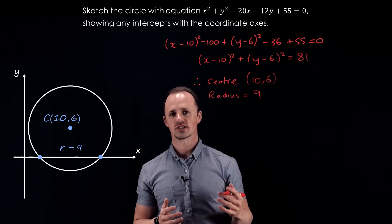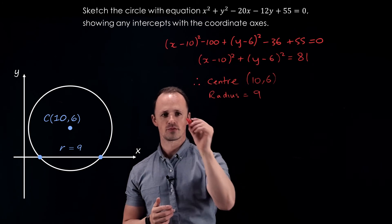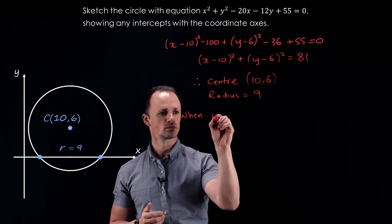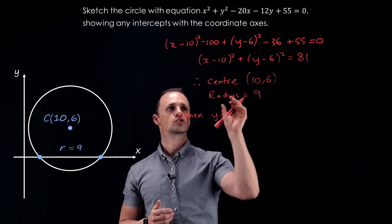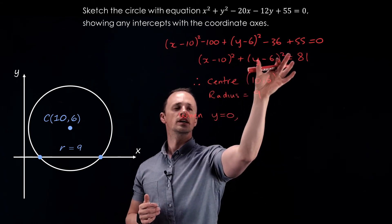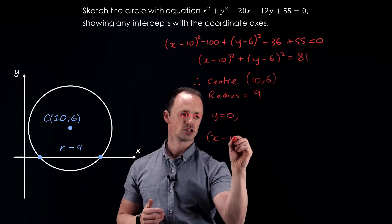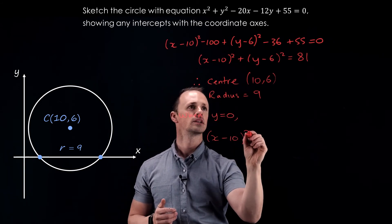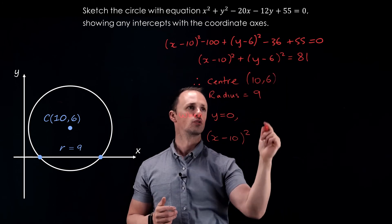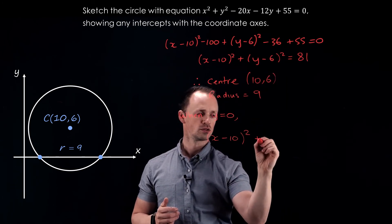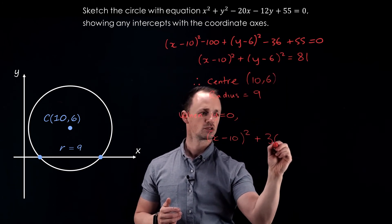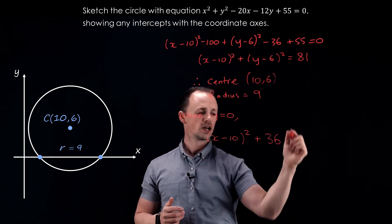When something crosses the x-axis, the y-coordinate has to be 0. So substituting y equals 0 into our equation for the circle, we're going to get x minus 10 all squared plus minus 6 all squared, which is 36, equals 81.